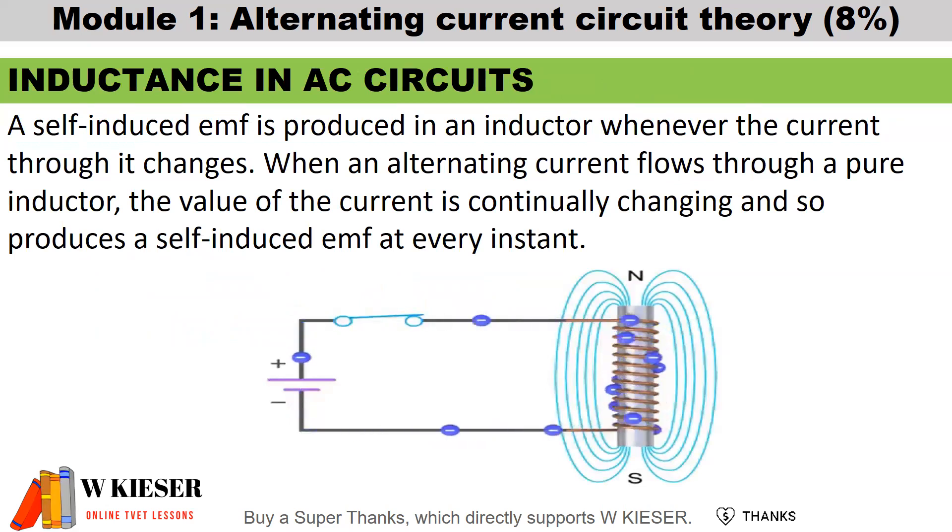A self-induced EMF is produced in an inductor whenever the current through it changes. When an alternating current flows through a pure inductor, the value of the current is continually changing and so produces a self-induced EMF at every instant. Self-induced EMF is also known as back EMF for motors or counter-EMF.